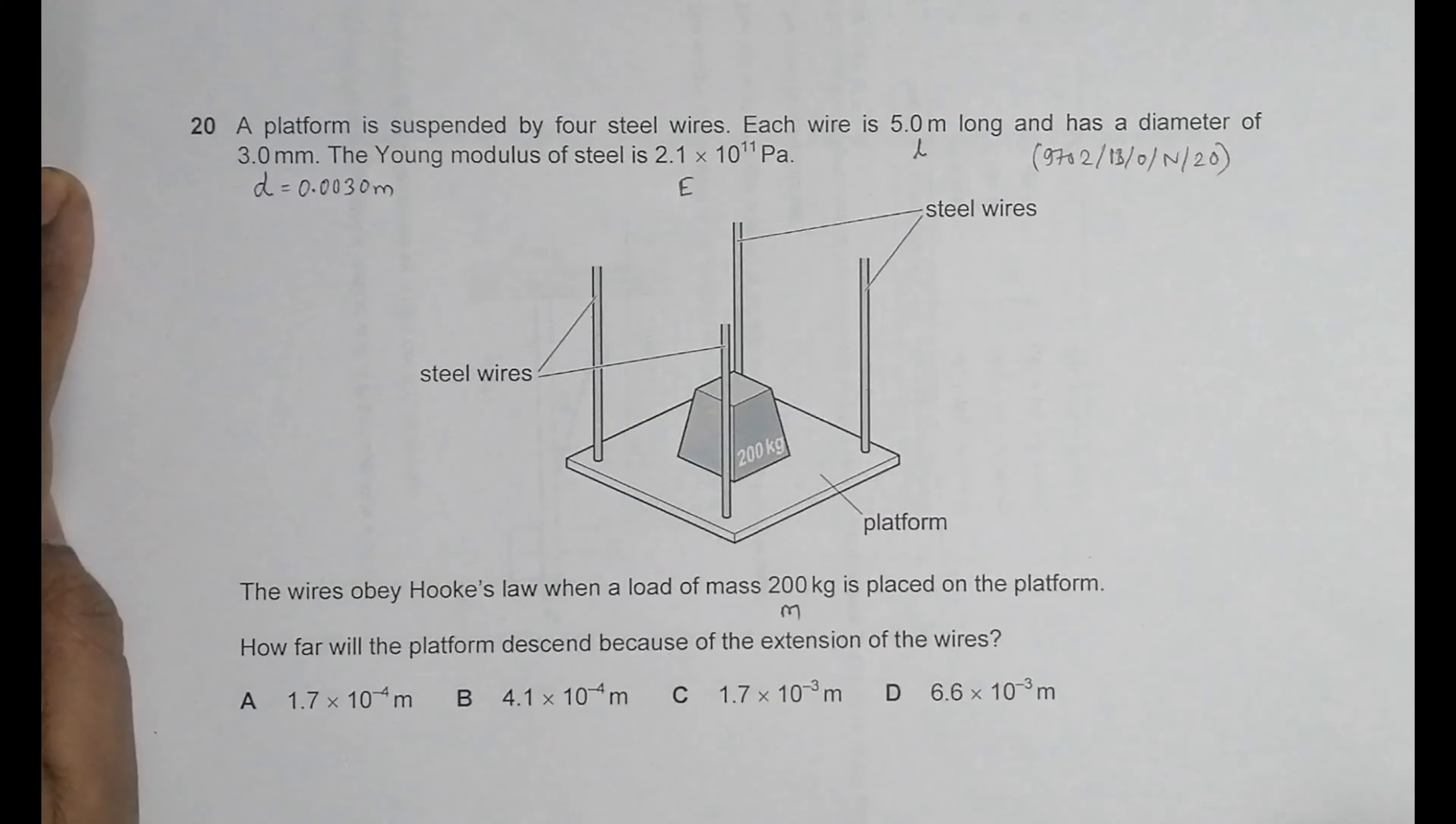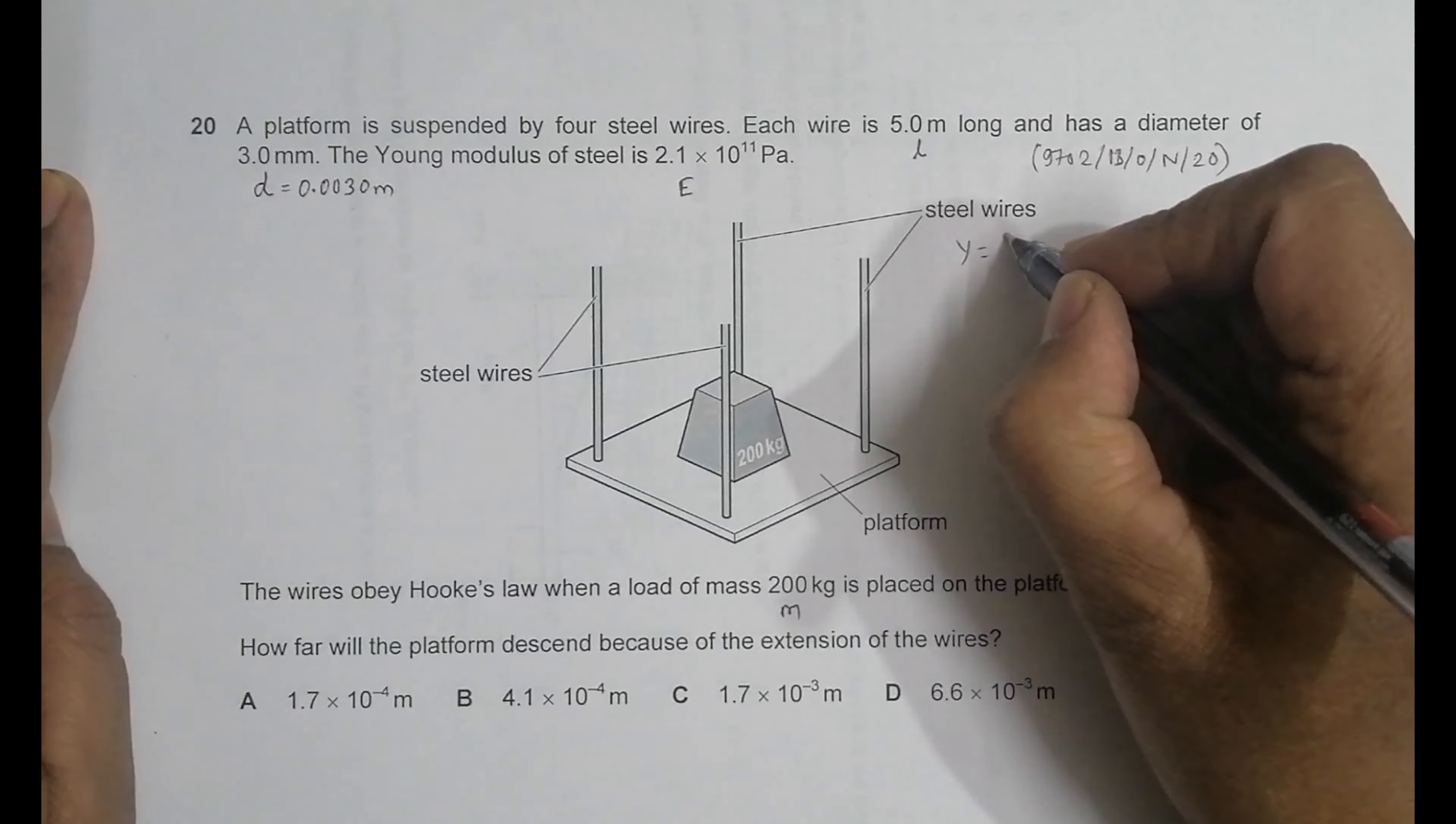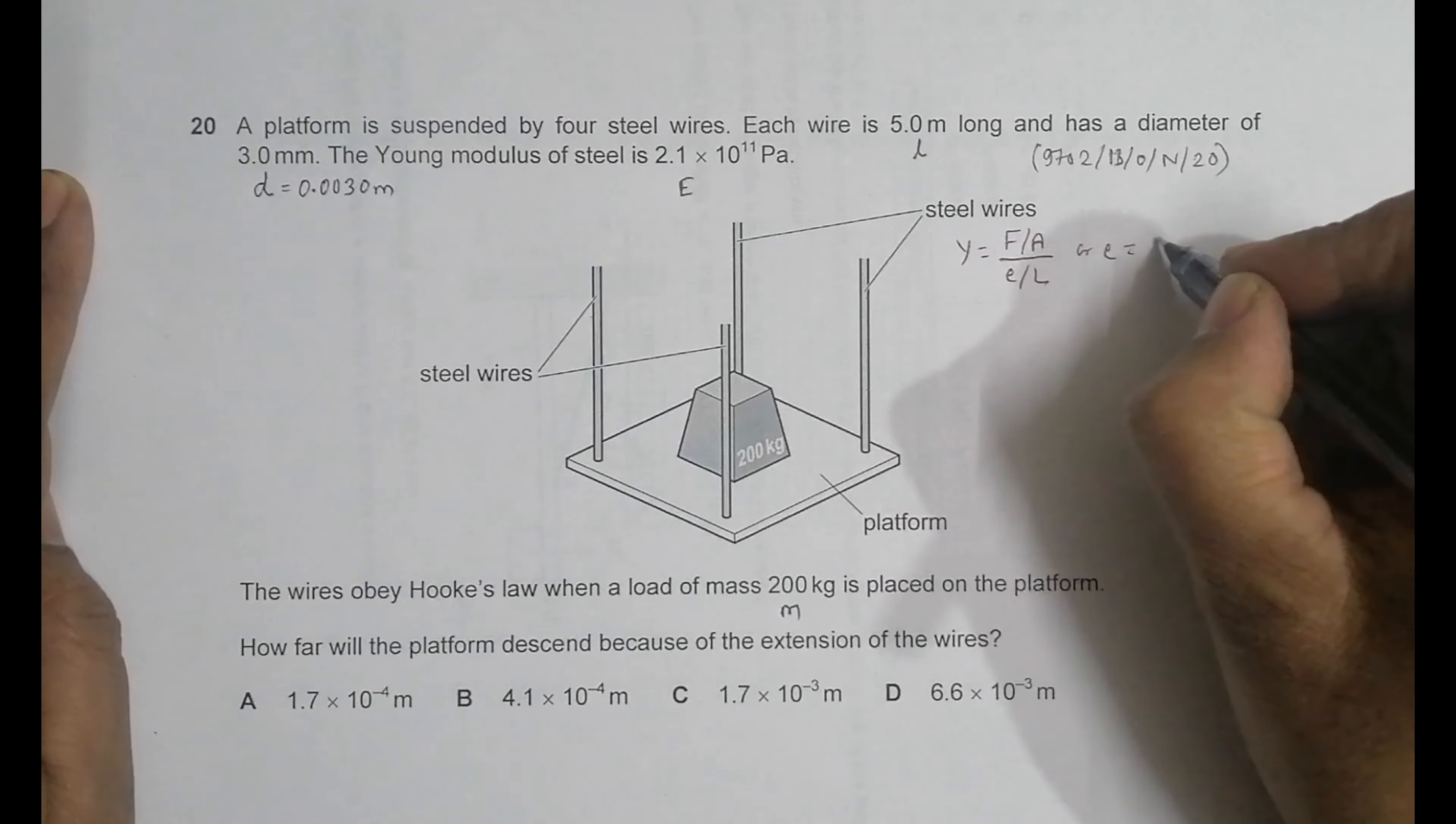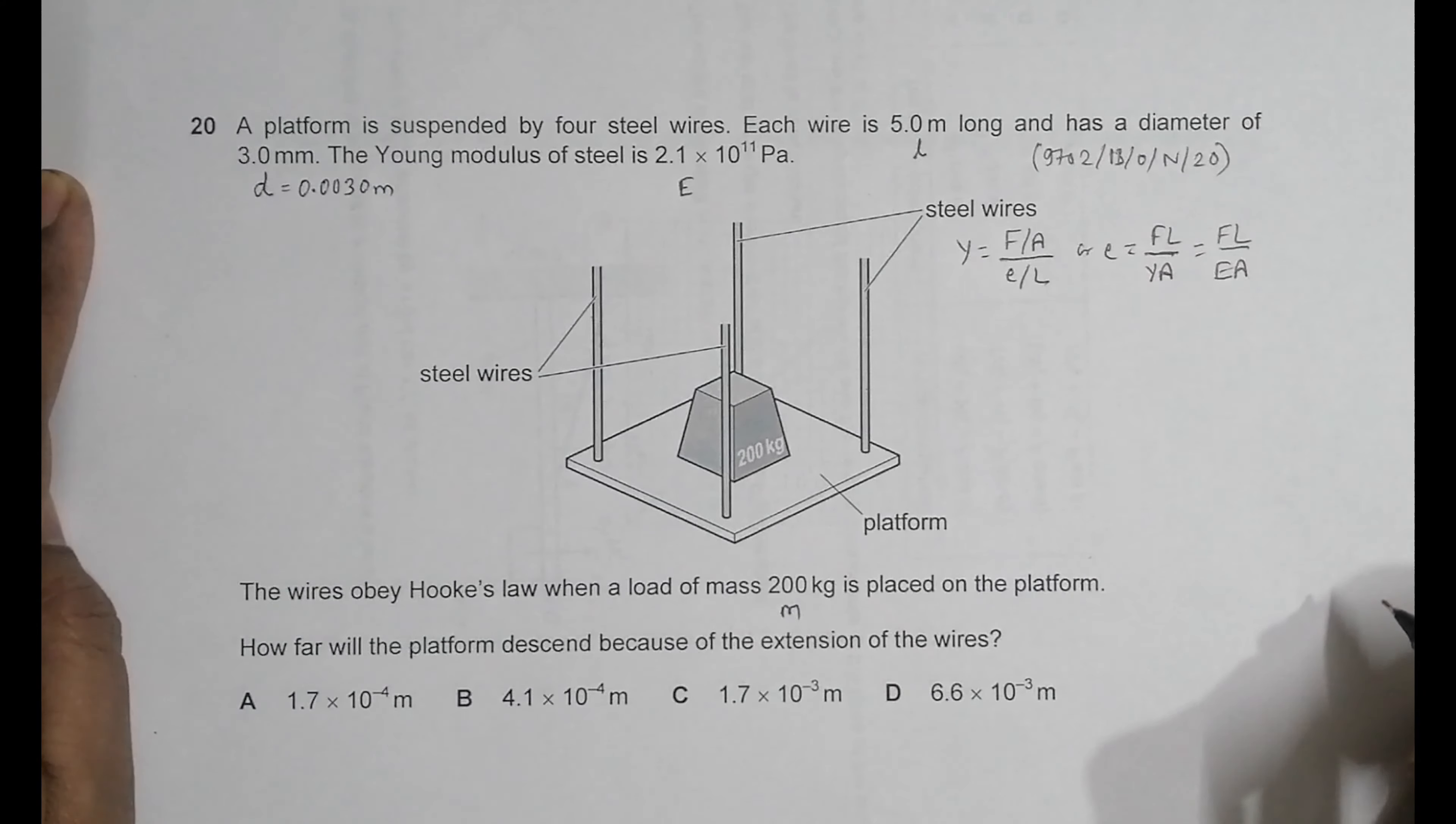Let's find the extension. The equation is Y equals stress by strain. Stress is F by A, and strain is extension by L. This gives us E equals FL by YA. In Cambridge we use the symbol E, so E equals FL by EA. You have to remember this formula by heart.